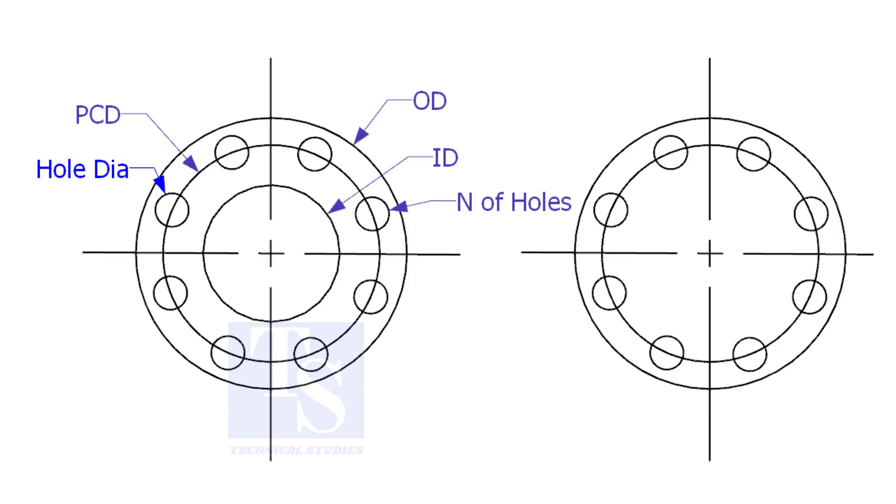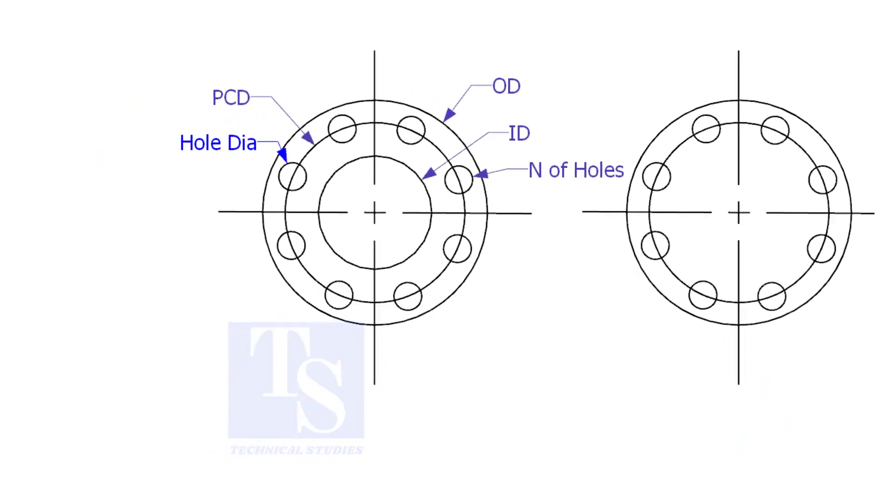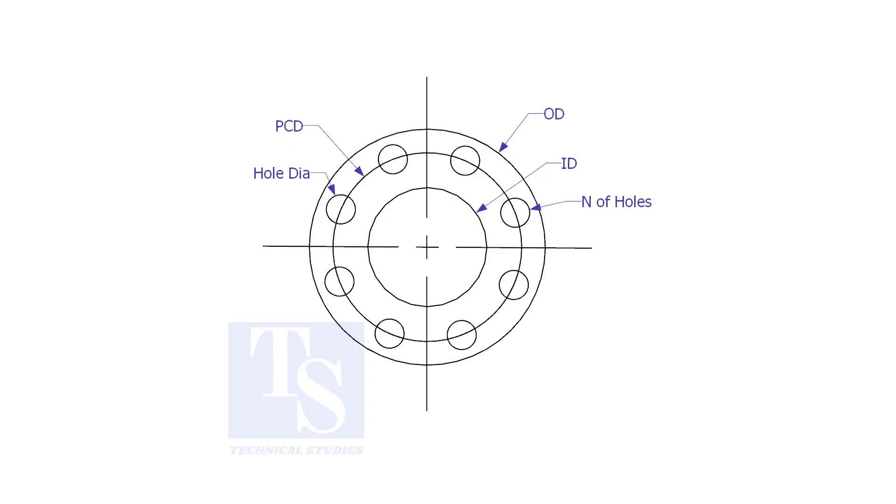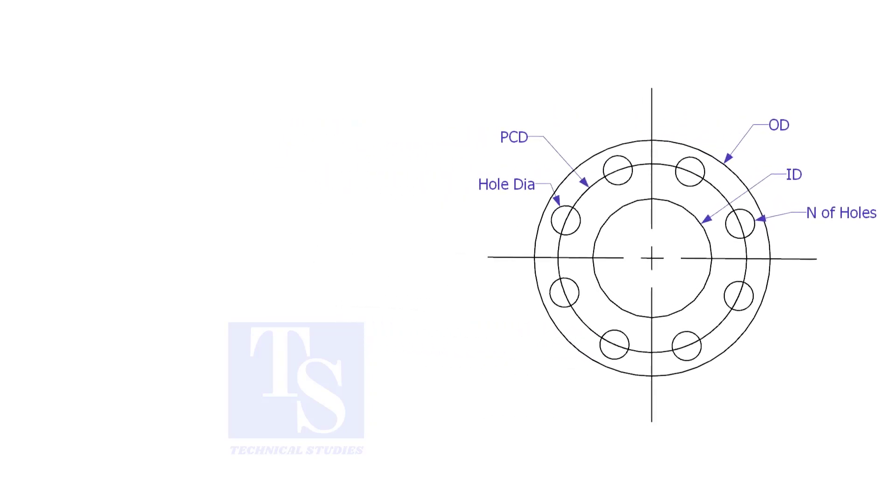To make a plate flange, there are two types of plate flanges: open and blind. To make a plate flange, we need to know the following things.